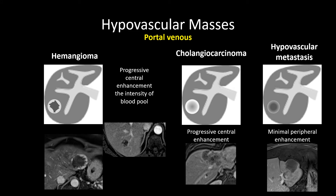In the portal venous phase, the hemangioma which showed peripheral nodular discontinuous enhancement may start to show more continuous enhancement, and the nodularity may be less apparent. However, it tends to remain peripheral, especially in the portal venous phase. In this smaller hemangioma we can see another nodule, so we still have that peripheral nodular enhancement. The enhancement should follow blood pool — we can see the IVC and the aorta, and the enhancing portions of the hemangioma are very similar in signal intensity to the aorta and IVC.